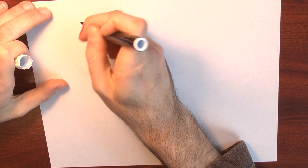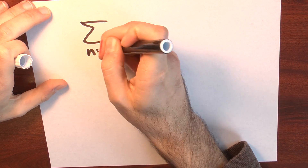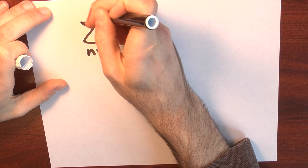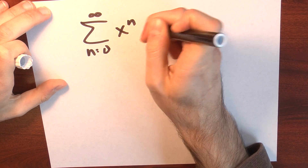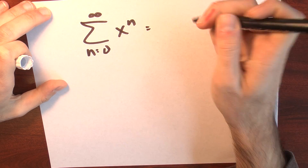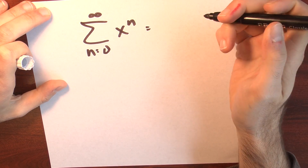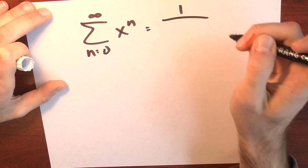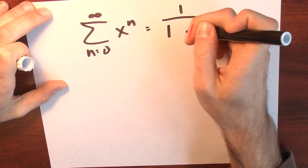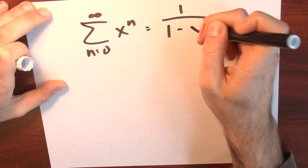We have some series that we already know about. For example, I know that the sum n goes from 0 to infinity of x to the n. That's a power series for a function we already know — it's just the power series for 1 over 1 minus x.